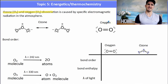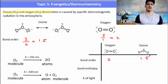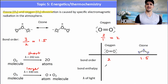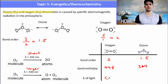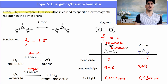Ozone and oxygen dissociate due to electromagnetic radiation from the Sun. Ozone has a double bond and a single bond between oxygen atoms, giving it a bond order of 1.5. Oxygen has a double bond, giving it a bond order of 2. Breaking oxygen into atoms requires wavelengths less than 242 nm — a very short, high-energy wavelength. Ozone dissociation occurs at a larger wavelength, meaning less energy is needed. So it takes more energy to break the O=O double bond than the bond in ozone, because ozone is a resonance structure between a single and double bond.